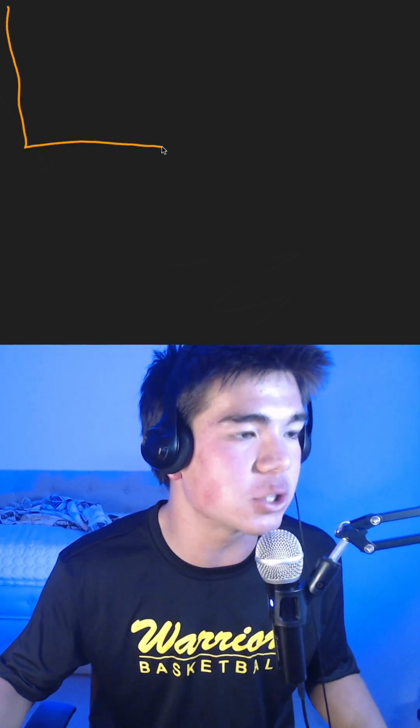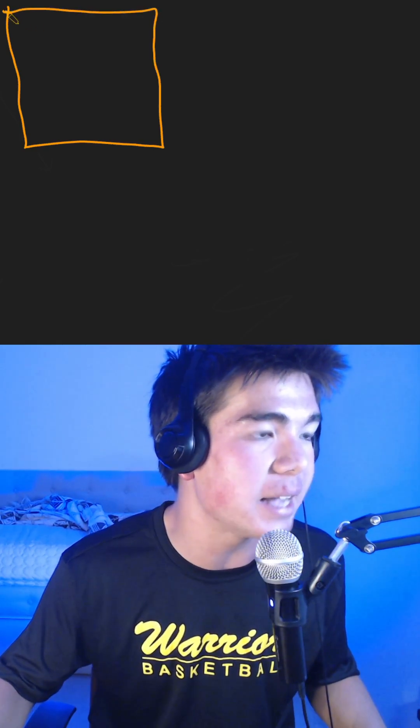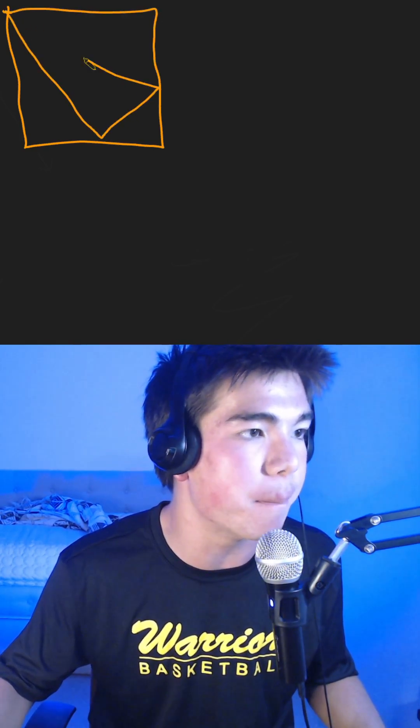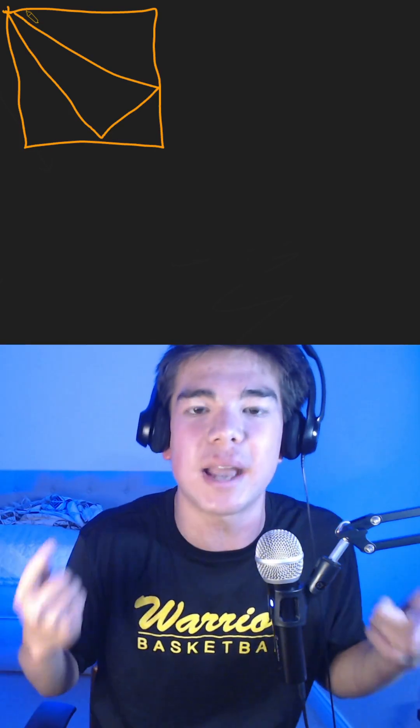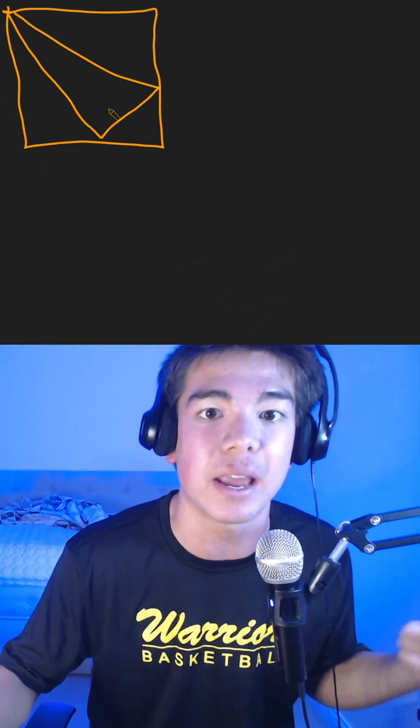Alright, so as with any geometry problem, let's draw a diagram to start. Something that's really interesting about this problem is that we know exactly that the midpoints are in the triangle, but we don't know anything about the rectangle itself, except that the area is 72.